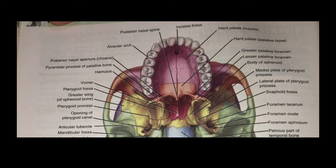This pterygoid fossa has right and left sharp corners which we have called the pterygoid process. There are two borders made like plates — a medial plate and a lateral plate. The medial plate of the pterygoid process is on the medial side with respect to the vomer, which is your nasal cavity's central line. On the lateral side is the lateral plate of the pterygoid process.